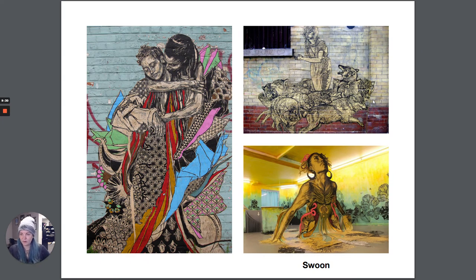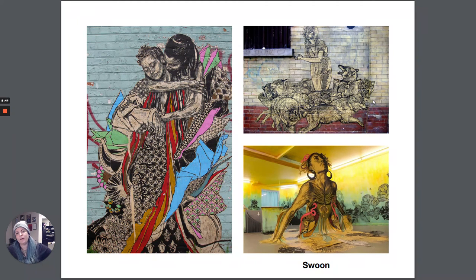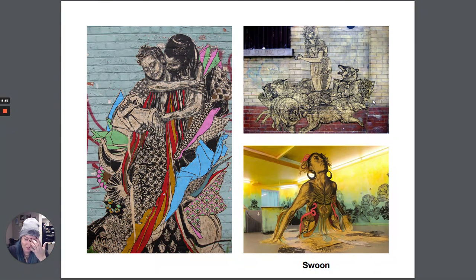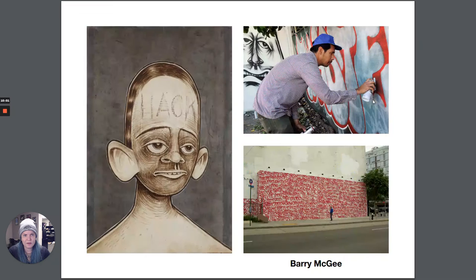Swoon does a lot of woodblock-style work — very linear and graphic. She cuts around the shapes and silhouettes and then wheat pastes them onto walls. She also does three-dimensional installation work; there was an installation of hers at the Brooklyn Museum about ten years ago. She's a super interesting artist who does a lot of great stuff.